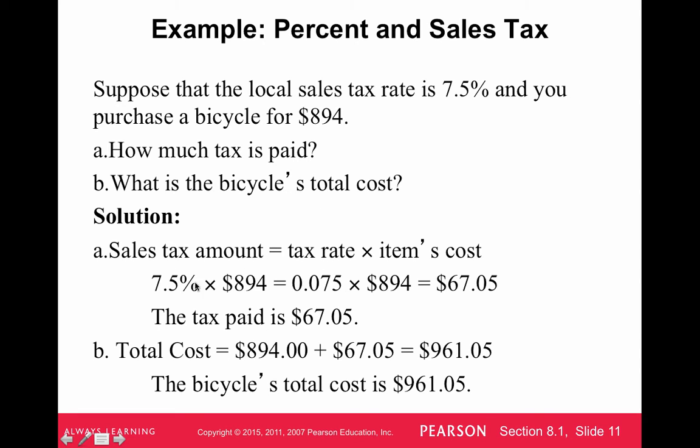So, in order to do a percent times a number, you need to convert that to a decimal. So, 7.5%, if you move the decimal two spots to the left, or divide it by 100, you'll get 0.075. 0.075 times $894 gives us $67.05. Remember to round that to the nearest cent. And then, $67.05 is the tax. Then the total cost is just you add the tax on. So, $894.00 plus $67.05 is $961.05. The bicycle's total cost is $961.05.